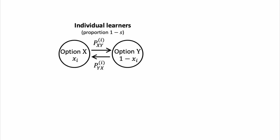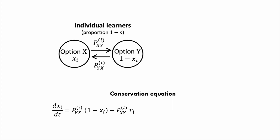Now let's take a look at how we have framed this issue mathematically. We consider that among individual learners, some favor option x and some favor option y. The proportion of each is denoted as x and y minus x. Those individual learners can shift between the two options with transition probability going from y to x as p_yx and vice versa as p_xy. From this picture we can write down a conservation equation: the rate of change of individuals favoring option x equals the rate at which individuals come into option x from option y minus those leaving option x into option y.